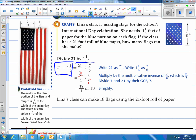So you can see this is what you're doing. You're taking 21 and dividing by 1 and 1/6. Notice how they convert them to fractions. Then they do the keep change flip. They reduce. You can see the red there. It comes out to be 18. So they can make 18 flags using the 21 foot roll of paper.